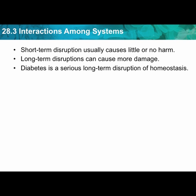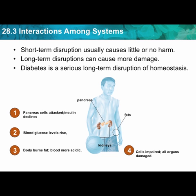Diabetes is one of these diseases — a serious long-term disruption of homeostasis and blood sugar balance. Pancreas cells are attacked, damaged, or don't work properly, and insulin production declines. As you eat normally and take in sugar, your blood glucose levels rise above the point they should. Insulin normally converts glucose into glycogen because too much glucose is harmful to cells. If levels continue to rise, the body burns fat and blood becomes more acidic.